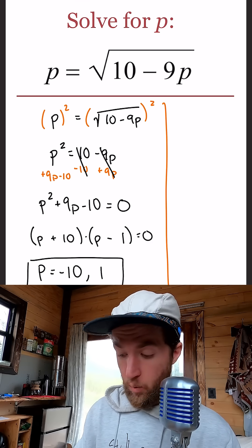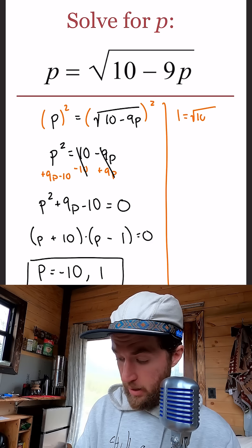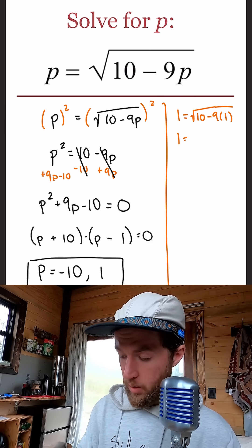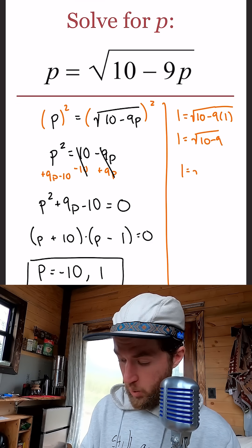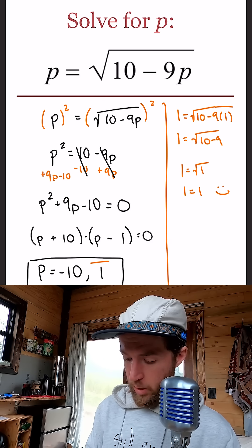So let's start with 1. Does 1 equal the square root of 10 minus 9 times 1? Plugging in 1, we get 1 equals the square root of 10 minus 9. Does 1 equal the square root of 1? 1 equals 1. Yes, happy. So 1 is an official answer.